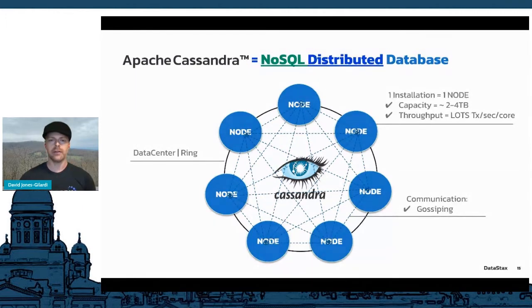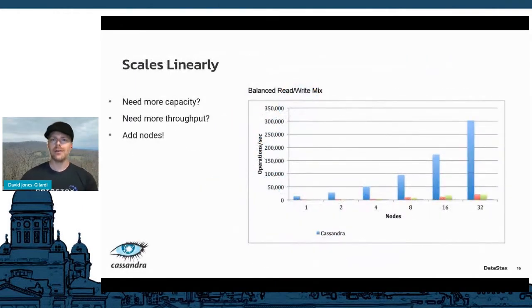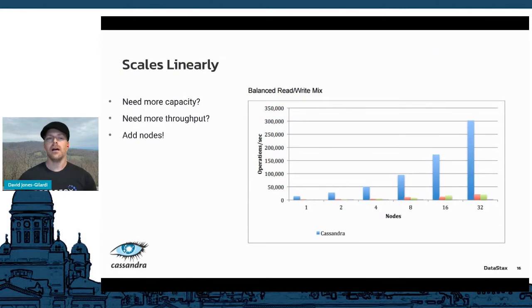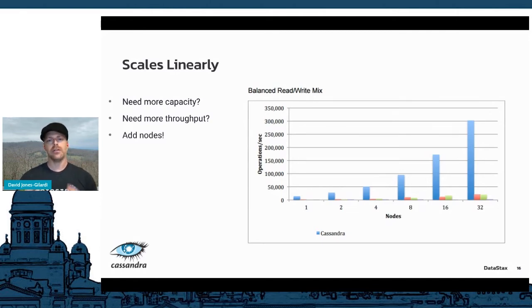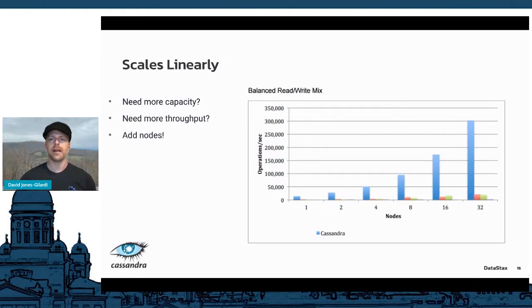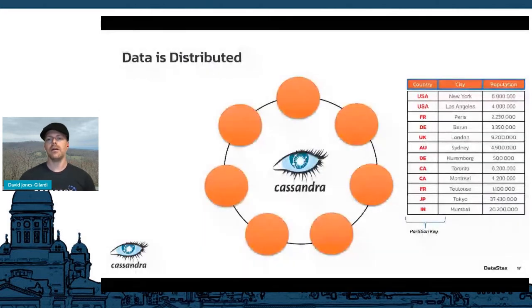One of the really neat things about Cassandra is its ability to horizontally scale indefinitely. If you need more throughput or capacity — say you want to double your throughput — you double your nodes. This chart, done by a third party going up to 32 nodes, shows that it holds true: it's linearly scalable. Double your nodes, double your throughput and capacity.